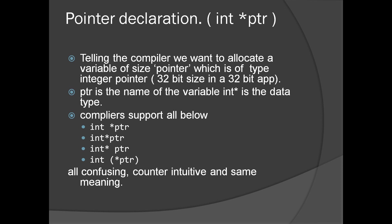The pointer declaration in star PTR is telling the compiler we want to allocate a variable of size pointer, which is of type integer. Basically we are telling the compiler to allocate space for a 32-bit number. PTR is the name of the variable and int star is the data type — just like int a. The compiler supports all of these syntaxes: int space star PTR, int star PTR with no space, or int star PTR with the space on either side, or with parentheses. All these declarations are confusing, counterintuitive, but have the same meaning.